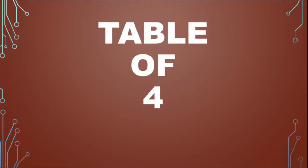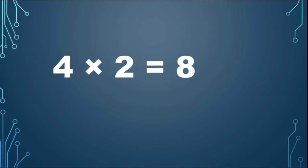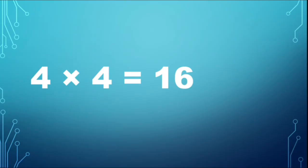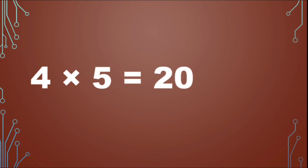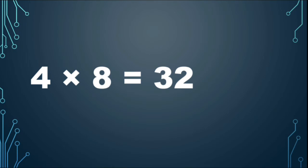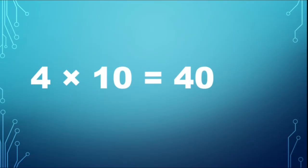Table of 4. 4 1s are 4, 4 2s are 8, 4 3s are 12, 4 4s are 16, 4 5s are 20, 4 6s are 24, 4 7s are 28, 4 8s are 32, 4 9s are 36, 4 10s are 40.